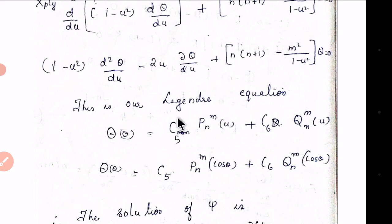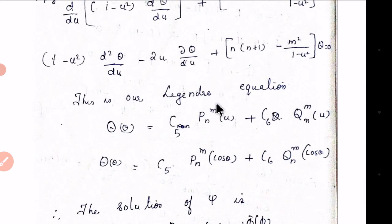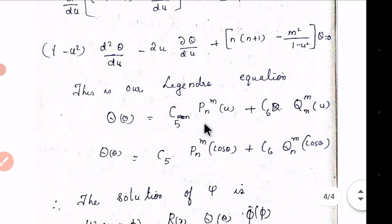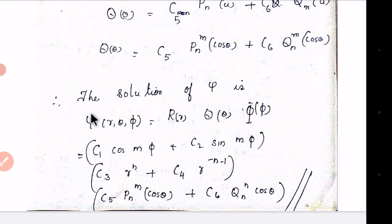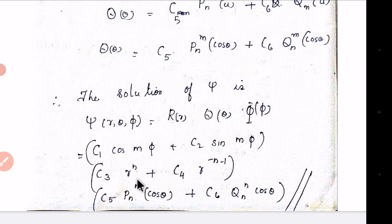The solution of the Associated Legendre Equation is: Θ(θ) = c₅·Pₙᵐ(u) + c₆·Qₙᵐ(u). Therefore the general solution of ψ in Spherical Polar Coordinates is: ψ(r,θ,φ) = [c₁cos(mφ) + c₂sin(mφ)] · [c₃rⁿ + c₄r^(−n−1)] · [c₅Pₙᵐ(cosθ) + c₆Qₙᵐ(cosθ)].